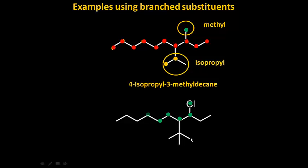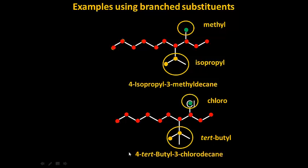Let's look at the bottom example where we have a tert-butyl. Find the longest chain - using different colored dots to show where it is. The longest chain here is the 10-carbon chain, and the substituent is a tert-butyl, and this is chloro. So this becomes 4-tert-butyl-3-chlorodecane. Notice tert-butyl comes before chloro because 'tert' is only a prefix - it's tertiary butyl - so the B comes before C when saying your ABCs.